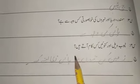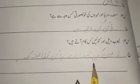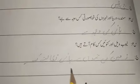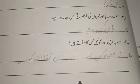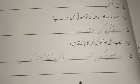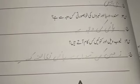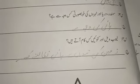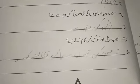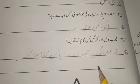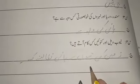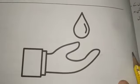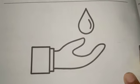سوال نمبر چار: ٹیوب ویل اور کنویں کس کام آتے ہیں؟ جواب: زمین کی تہوں سے پانی نکالنے کے لیے۔ یعنی ٹیوب ویل اور کنوئوں کے ذریعے سے ہم زمین کی تہوں سے پانی نکالتے ہیں، جو کہ ہمارے کام آتا ہے۔ ہم اس پانی کو اپنی روزمرہ زندگی میں استعمال کرتے ہیں اور پیتے ہیں۔